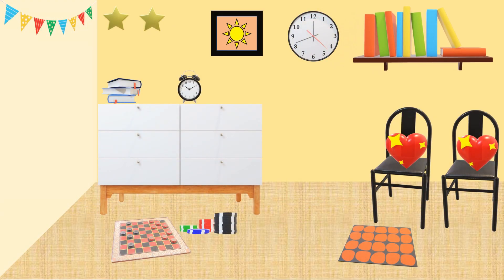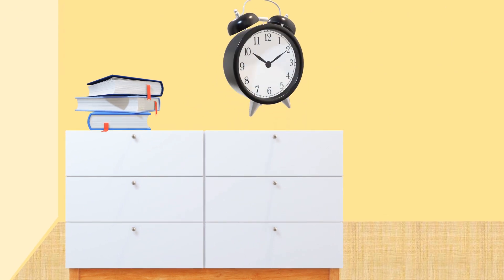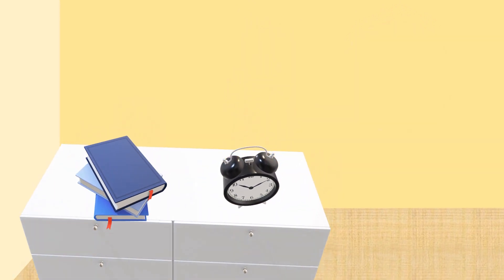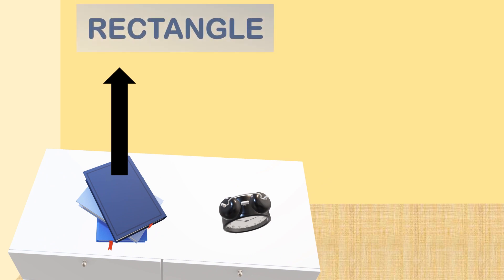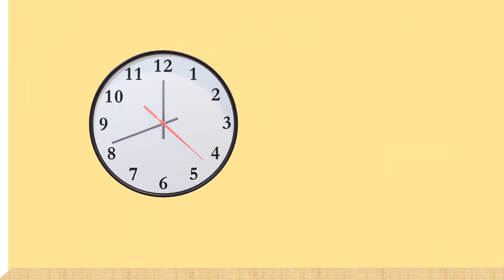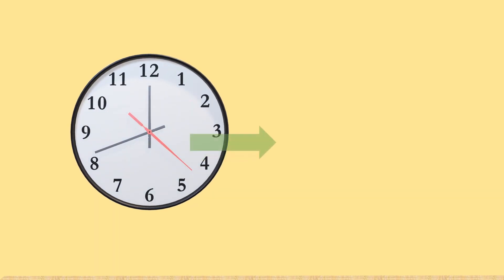These are books. Its shape is rectangular. This clock is circular in shape — the shape is circle. These books are rectangular in shape — the shape is rectangle. This wall clock is circular in shape — the shape is circle.